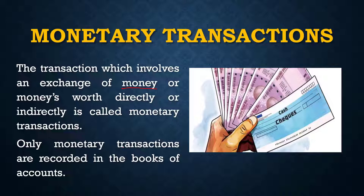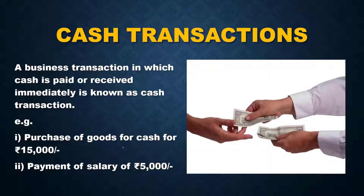A cash transaction is a business transaction in which cash is paid or received immediately at the time of the transaction. For example: purchase of goods for cash — rupees 15,000 — or payment of salary of rupees 5,000. Both of these are examples of cash transactions.